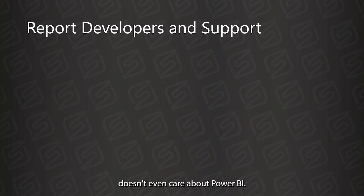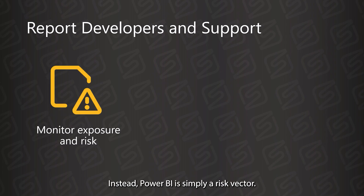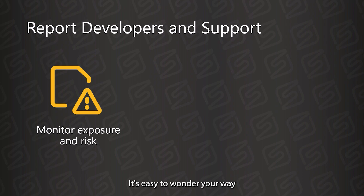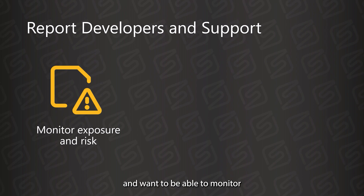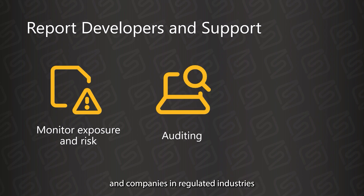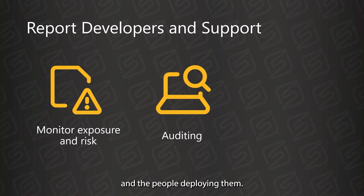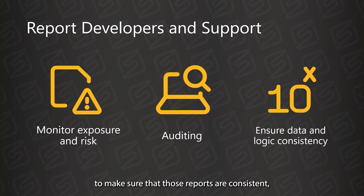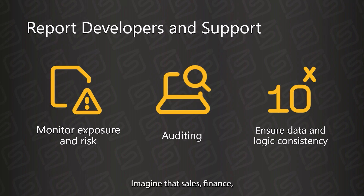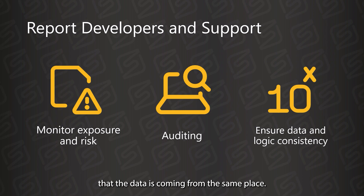Our last type of user doesn't even care about Power BI. Instead, Power BI is simply a risk vector. Imagine, for example, that you add everyone to a workspace, but you never circle back as reports and datasets are being added. It's easy to wander your way into providing more access than you intended. Corporate governance and compliance folks care about this sort of thing and want to be able to monitor who has access to the most sensitive and confidential data. Additionally, large companies, publicly traded companies, and companies in regulated industries all have to deal with auditing. In some cases, there has to be a firewall between the people writing the reports and the people deploying them. Finally, it's important to make sure that those reports are consistent, especially financial reports provided to external users or auditors. Imagine that sales, finance, product, and marketing all have different versions or definitions of total sales. Data lineage allows for making sure that the data is coming from the same place.